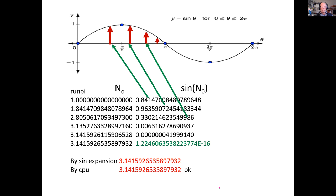Well, we see at the bottom of the screen, by this expansion, we get pi to 16 decimal places. And from the CPU, likewise, we get 16 decimal places.